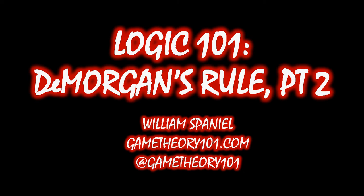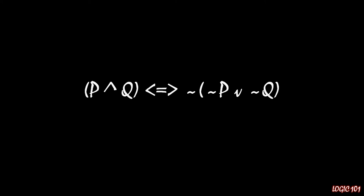The first part we covered last time: we found out that you could express p and q also as not (not p or not q), which meant that if you have the more complicated expression on the right, you can simplify it to the very simple expression p and q.